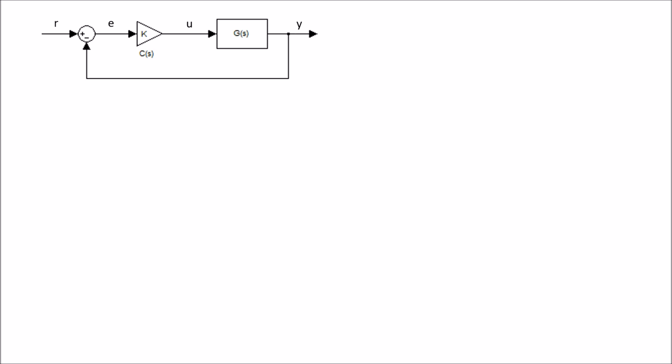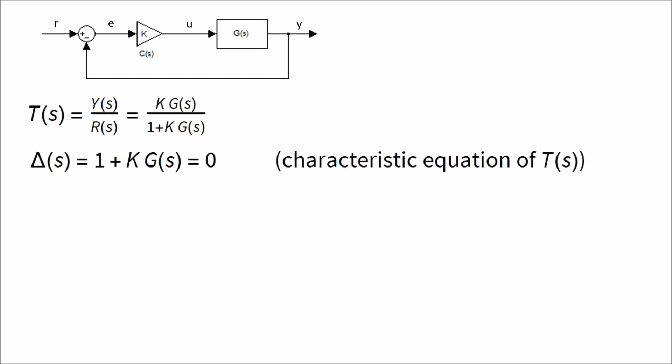In our previous discussion, we said that the classical root locus architecture we were going to consider is a system where you have a plant G(s) — your open loop plant — and then we're going to close the loop around this with a simple proportional feedback control of value K. This system is equivalent to a single closed loop transfer function, namely KG over 1 plus KG. The characteristic equation is just the denominator of that closed loop transfer function: 1 plus KG(s) equals zero.